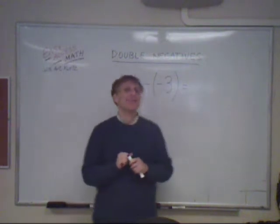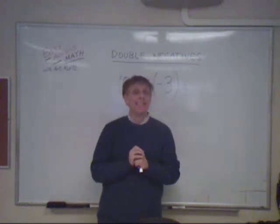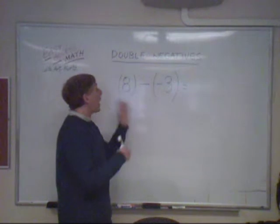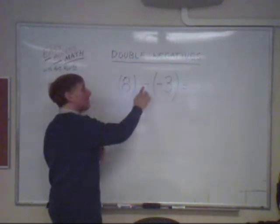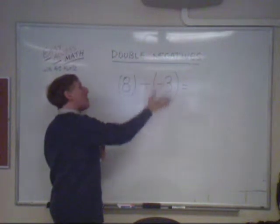You know, double negatives in math can be really tricky. And so I have an example here. We have 8 minus subtraction, and then a sign number negative 3.